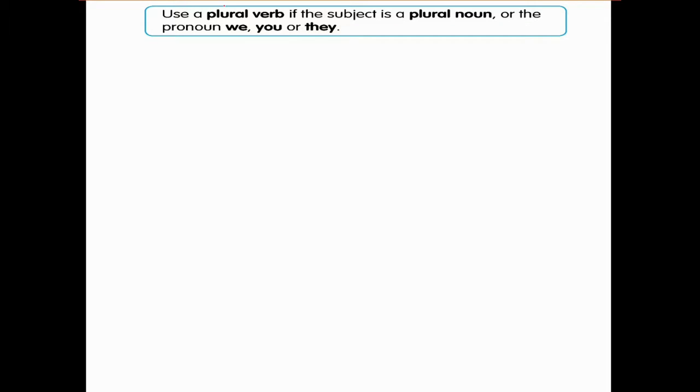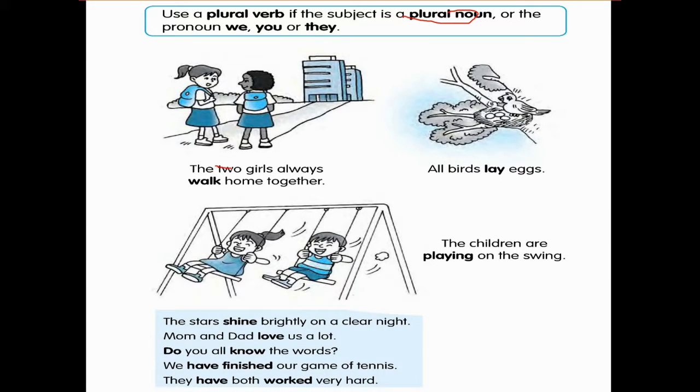And what about plural verb? You need to use a plural verb if the subject is a plural noun or the pronoun we, they, and you. Means the two girls always walk home together. All birds lay eggs. The children are playing on the swing. The stars shine brightly on a clear night. Mom and dad love us a lot. Do you all know the words? We have finished our games of tennis and they have both worked very hard.